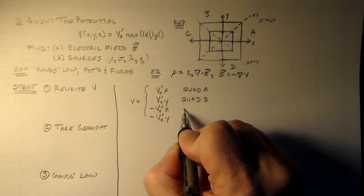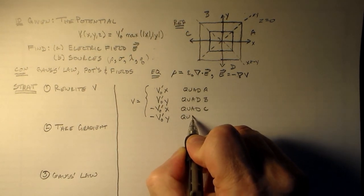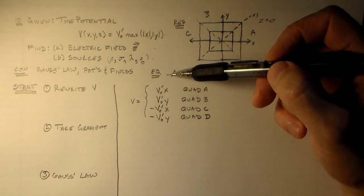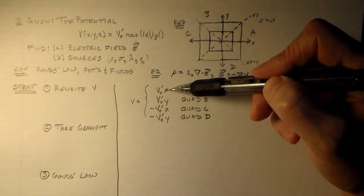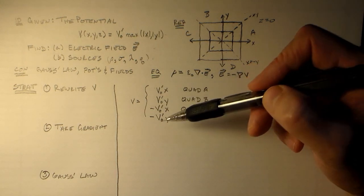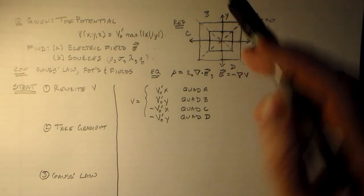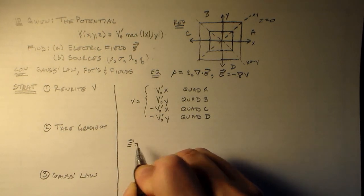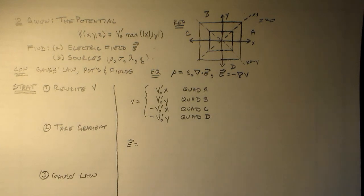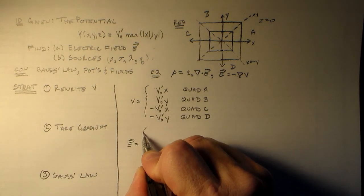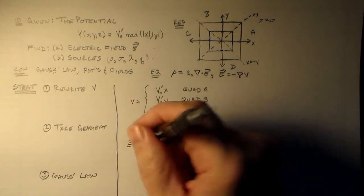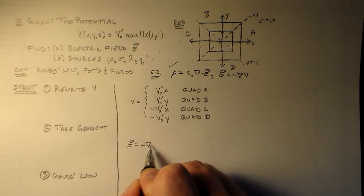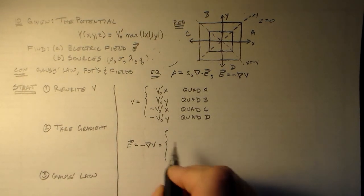Why didn't we just leave the absolute value in there? The whole reason for doing that is to get rid of something difficult. I did show you ways of handling the absolute value sign in taking derivatives, but if we're going to write this out the whole way, why not just get rid of it while we're writing it out? Then we don't have to worry about using those additional tricks which make the derivative so much harder.